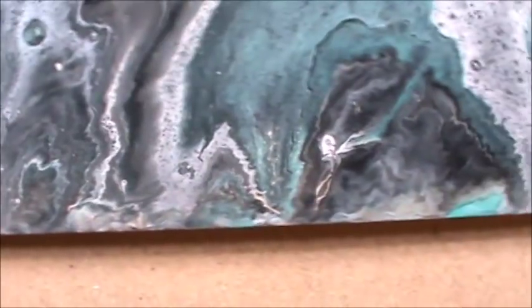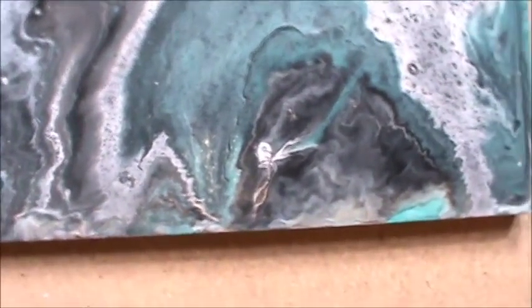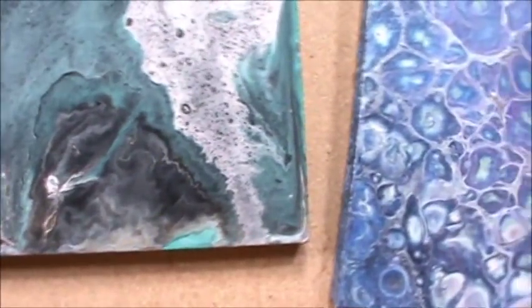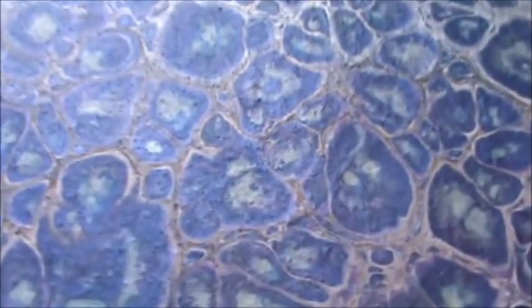So yeah, I had fun with that one. And this is another example, another chance for me to show you the difference on how Pouring Medium versus Floetrol dry. See, there's more of a gloss to that. That's got Pouring Medium in it from Liquitex. This one doesn't have a sheen to it. It's kind of chalky almost. There is definition in there.